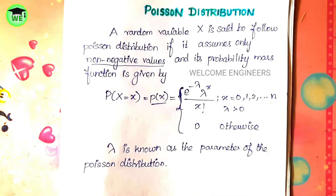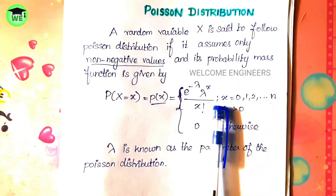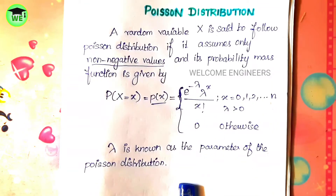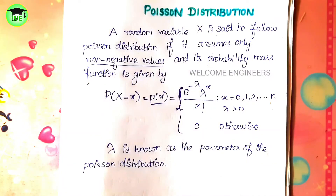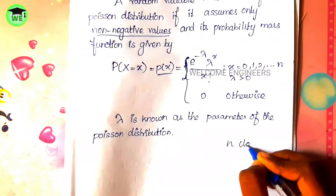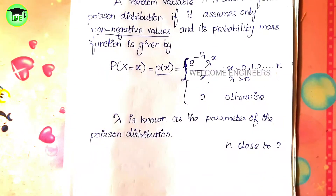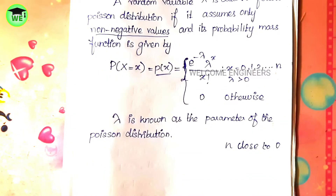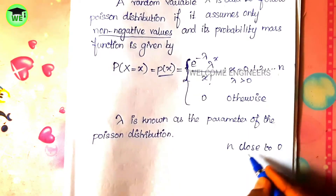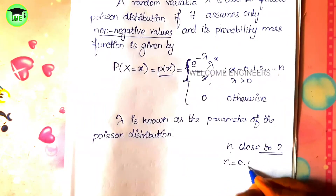In Poisson distribution, the parameter is lambda. We use Poisson distribution when the n value is close to zero. If n value is small, then we use binomial distribution. This is the key difference: if n value is close to 0 — for example, if n = 0.1 — then we use Poisson distribution.